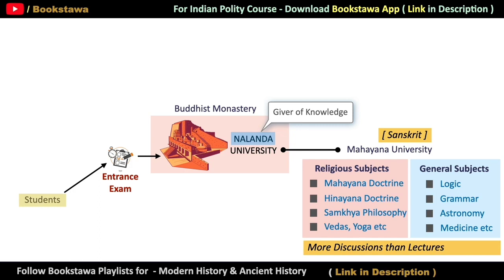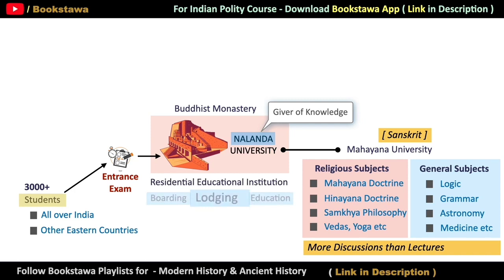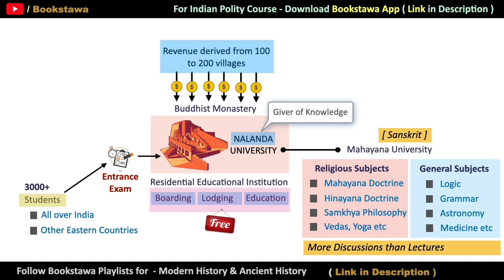Students used to come here from every corner of India, and at the same time, students from outside India — especially from Eastern countries — came to study here. Chinese traveller Xuanzang has told in his records that about 3,000 students used to study in this university. It was a residential educational institution where boarding, lodging, and education were all free for the students. The expenses were covered by the revenue generated from 100 to 200 villages, which was completely available to this Buddhist monastery that had become Nalanda University.